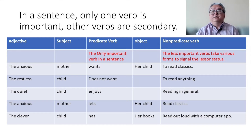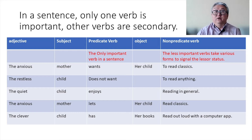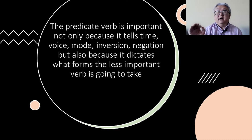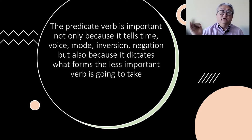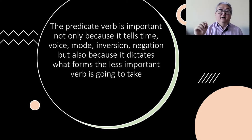In an English sentence, there's only one verb that matters. You can have a lot of verbs, but only one verb is important — other verbs are secondary. The important verb, the only important verb, is called the predicate verb. All the rest of them are called non-predicate verbs. The predicate verb is important not only because it tells time, voice, mode, inversion, and negation, but also because it actually dictates the form the next verb — the unimportant verb — should take. That's why the predicate verb is important; it has a lot of powers.